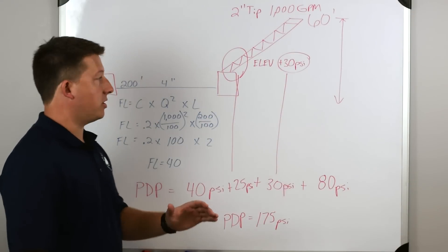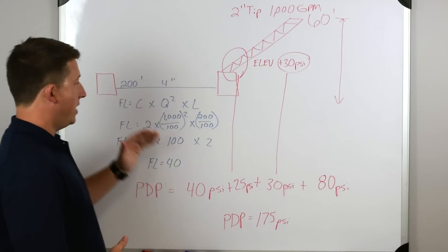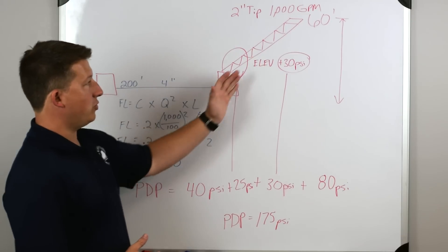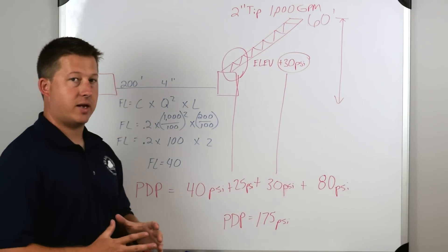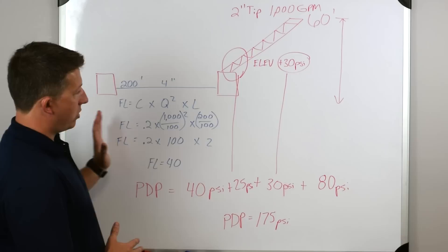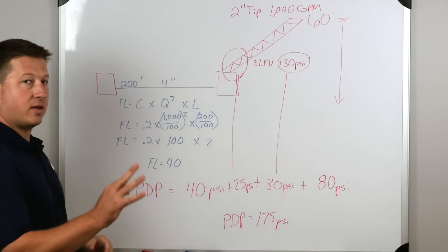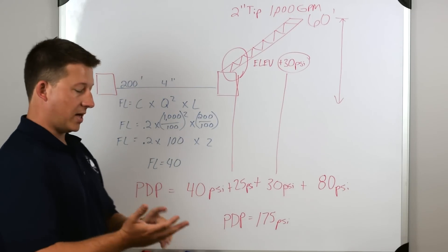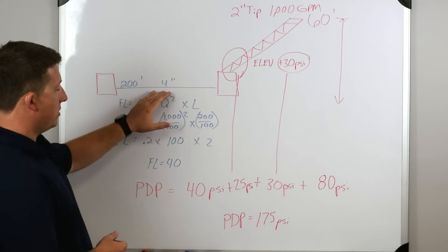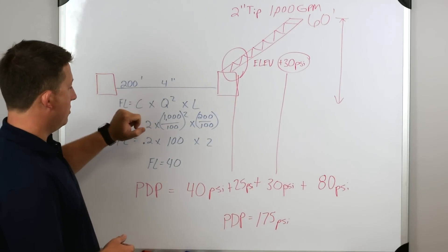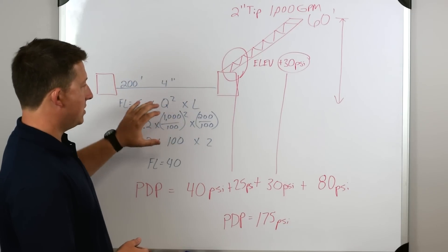In our next scenario, we're going to be talking about pumping to an elevated master stream. We're using one engine to pump to the aerial to feed it through a 200 foot 4 inch hose, an LDH hose. So we start off working left to right. We calculate our friction loss for this hose first. We need three things to calculate that friction loss: the size of the hose, the amount of water going through the hose, and the length of the hose. The size of the hose is a 4 inch hose. We have that. The length of the hose is 200 feet. We have that. But the quantity of water is missing.